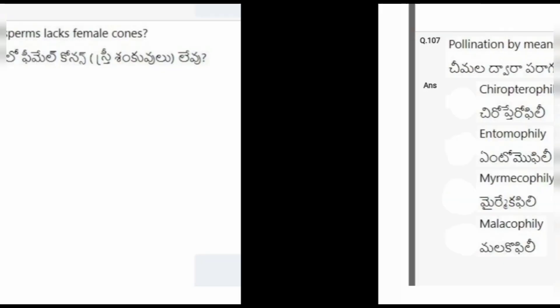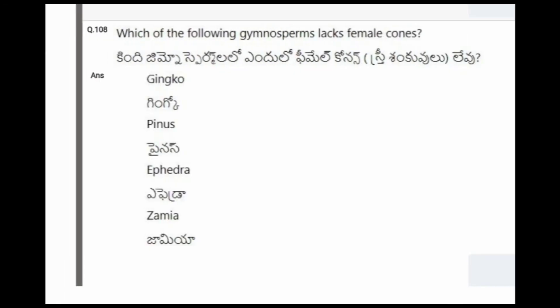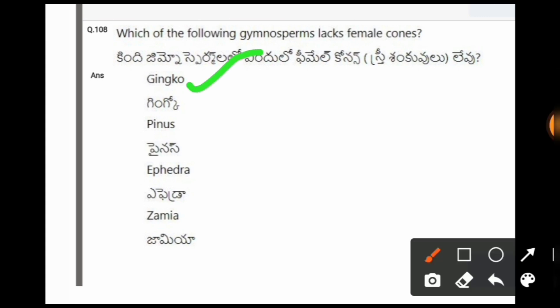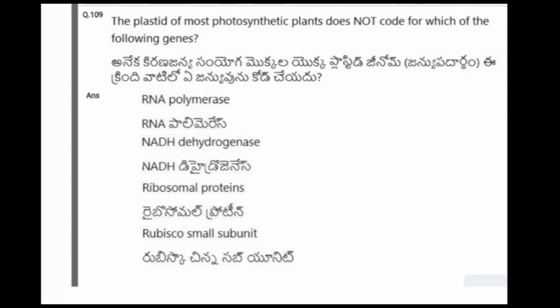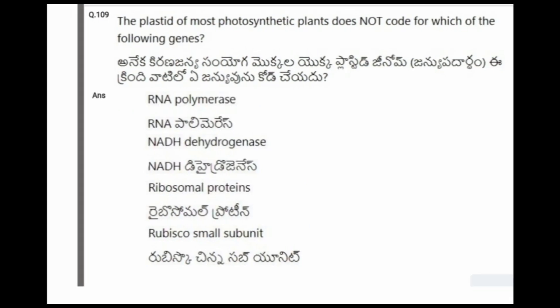Next question: Which of the following gymnosperms lacks female cones? The options are Ginkgo, Pinus, Ephedra, Zamia. The correct option is Ginkgo.